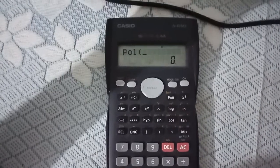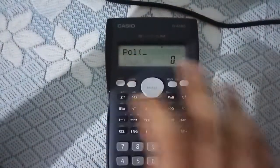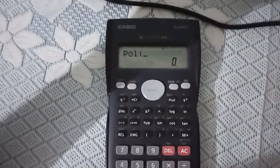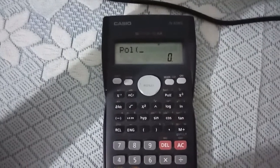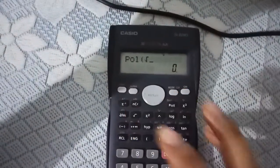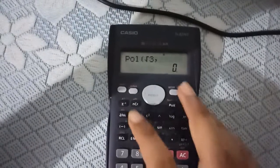You can see, press this pole button and pole will appear over here with a bracket. And you put the values of X and Y within this bracket. If I put the value root 3 comma root 3, I have given the value of X and Y.